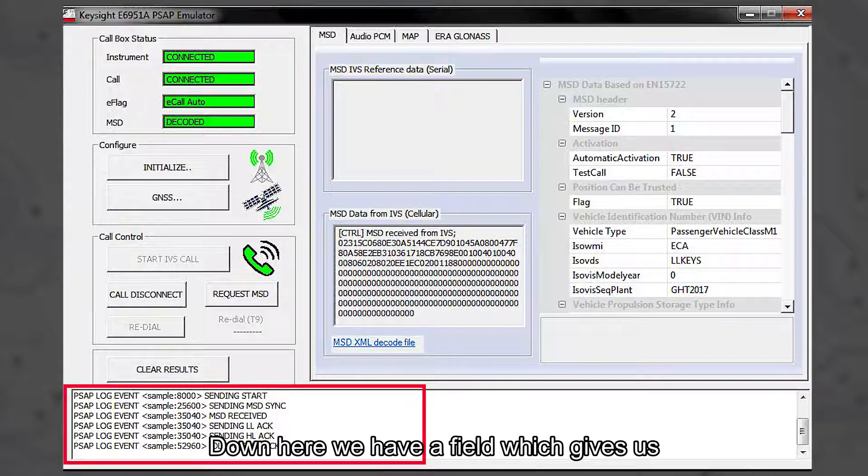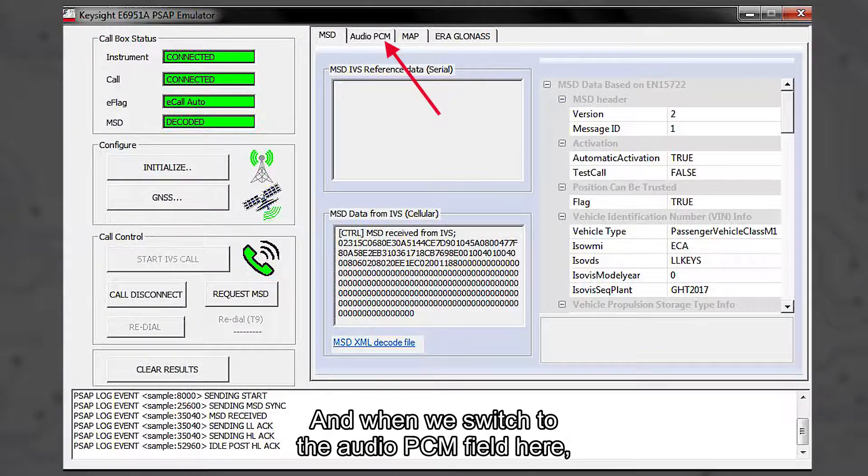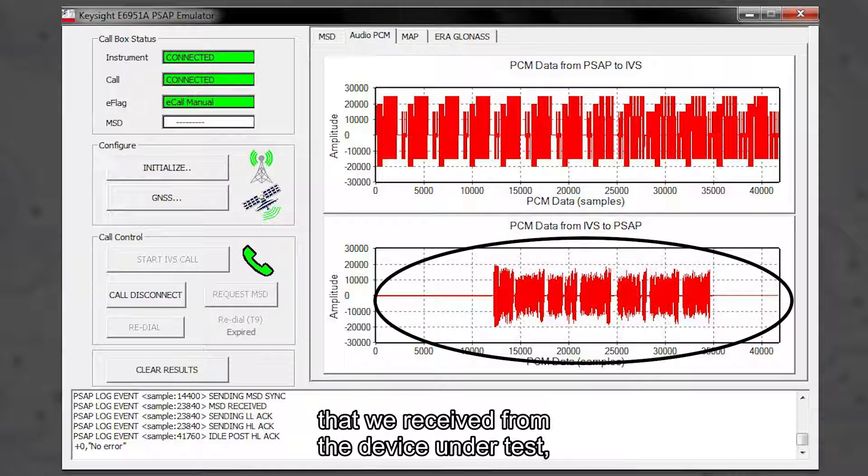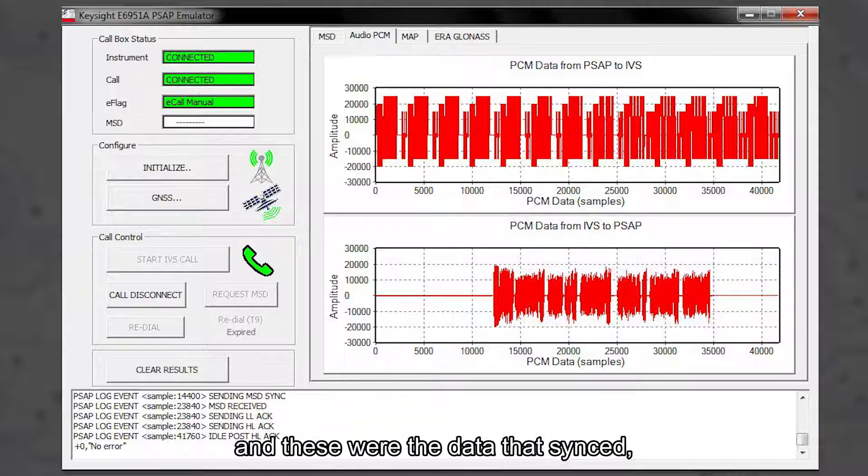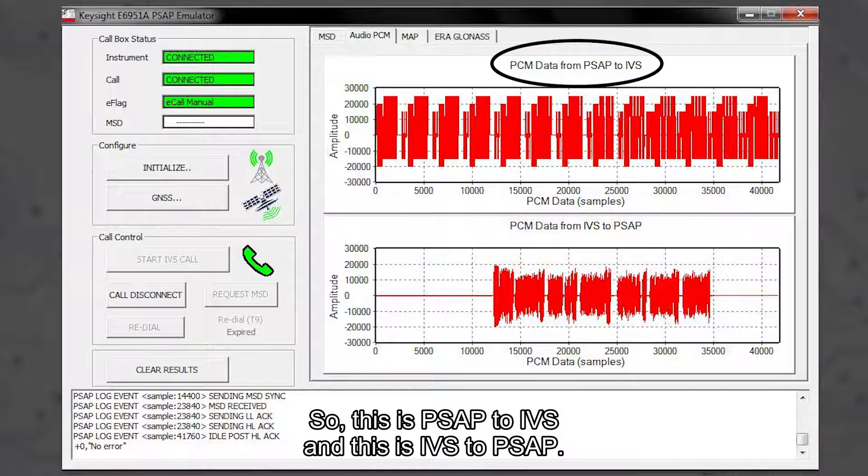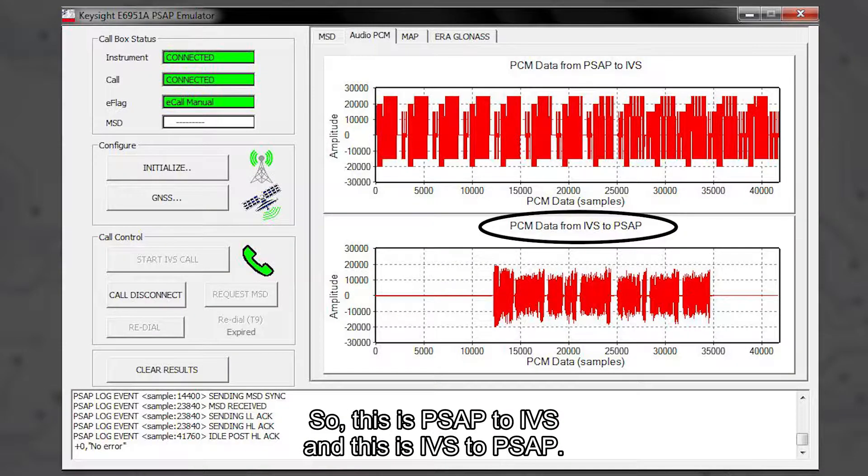Down here we have a field which gives us an overview of what happened, and when we switch to the audio PCM field here, this tab, you see these were the audio data that we received from the device under test and these were the data, the sync and the acknowledgement data from the PSAP. So this is PSAP to IVS and this is IVS to PSAP.